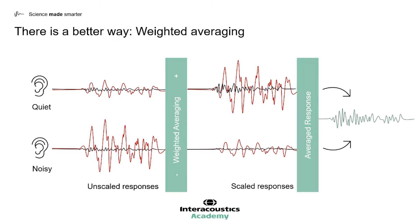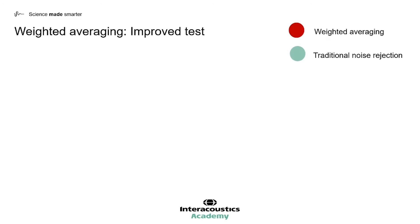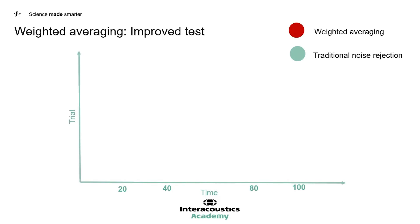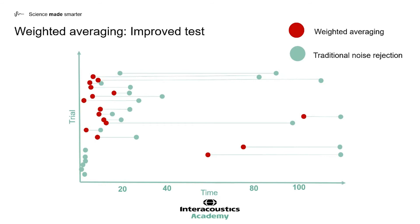So what does that mean for the person performing the screen? The first thing is that it results in improved test time. The graph displays test time on the x-axis and number of trials on the y-axis. We can see all the data points taken from a number of patients, showing the time it took to complete the OAE test using traditional signal averaging. When we perform the test in the same conditions using weighted averaging, the test times become much quicker. The test time is different for different patients as they have different noise levels and test conditions, but within all conditions weighted averaging improved test time.